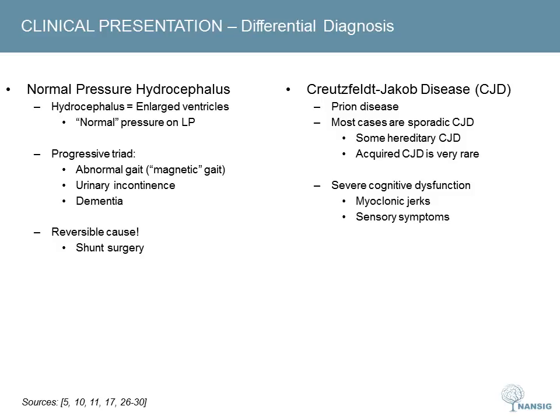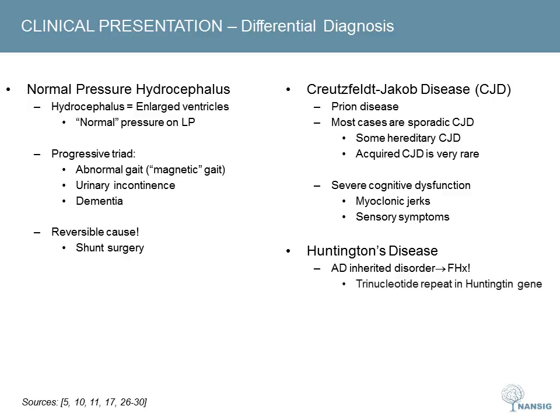Huntington's disease is inherited in an autosomal dominant pattern, and family history will probably be emphasised in exams. The disease occurs when a certain number of trinucleotide repeats occur in the Huntington gene. Onset is typically between 30 and 50 years of age. Classically, the disease presents with choreiform movements, psychiatric symptoms, and dementia, though motor symptoms and dementia may be later features.